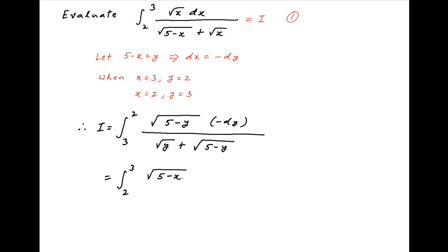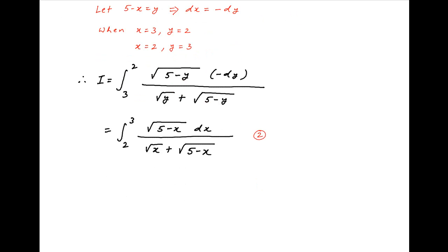Reversing the limits and replacing y with x, I can also be written as the integral from 2 to 3 of square root of (5 minus x) upon square root of x plus square root of (5 minus x). Let's call this result 2.